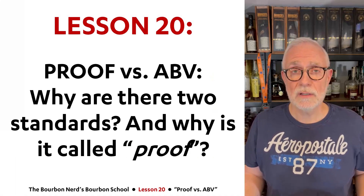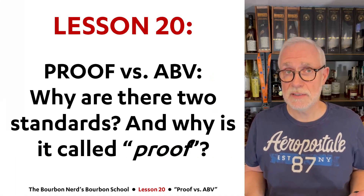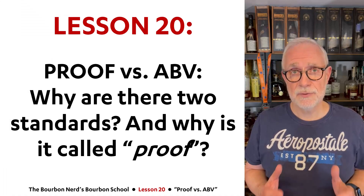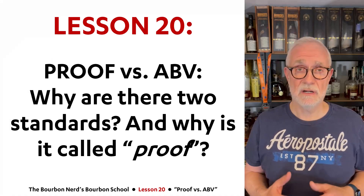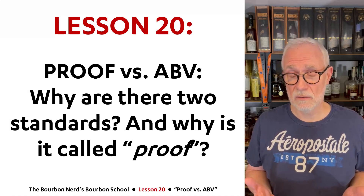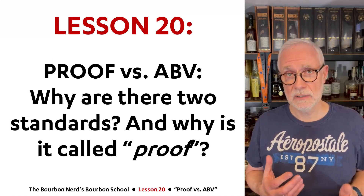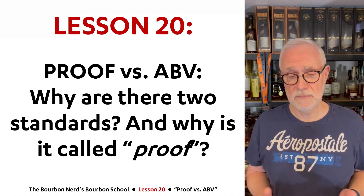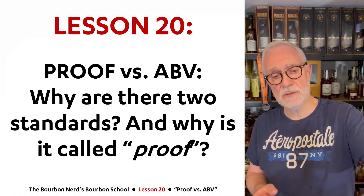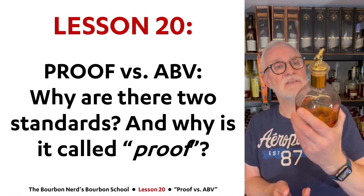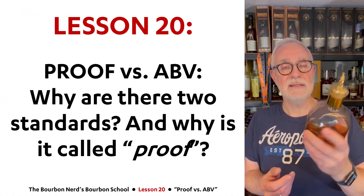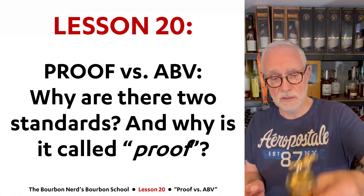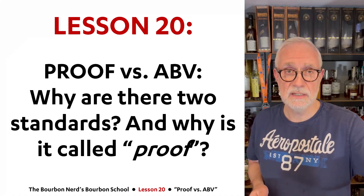Hello friends, The Bourbon Art here. Welcome to Lesson 20 in my Bourbon School. Today I'm going to tackle the topic of proof versus ABV, which are in fact both ways to measure alcohol. I'm also going to talk about why there are two standards and where the name proof comes from. And to help me through this episode, I am sipping on a Blanton's Gold — very easy to get hold of internationally, but in the US very difficult. Very nice whisky indeed.